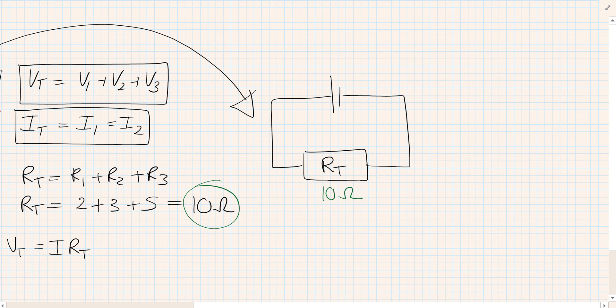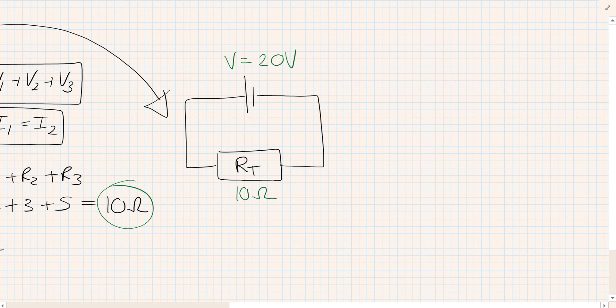Now let's imagine we've been asked to work out the current and we've been told that the voltage across the supply is 20 volts. Now that we know the total resistance, we can say V total equals I R total. To work out the current, I equals V over R, which would be 20 divided by 10, which is 2 amps or 2 coulombs per second.